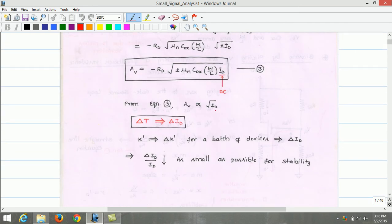Next, the drain current which we have seen here in equation 3 is dependent on temperature. As temperature changes, the DC drain current also changes. When the DC drain current changes, the voltage gain of the amplifier also changes. Therefore, the drain current flowing in the amplifier depends on temperature. Another factor which is most important for the amplifier is K dash. For a batch of devices, K dash may vary for different values of transistors.